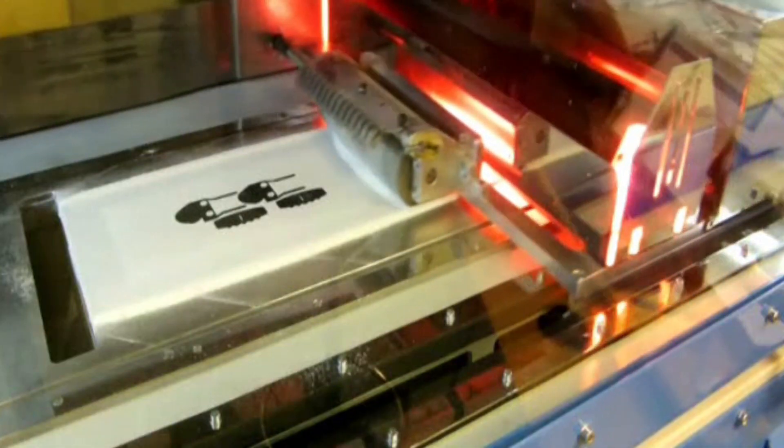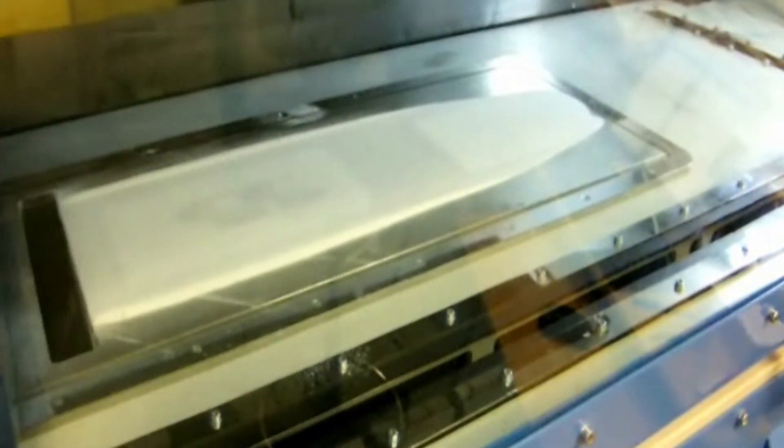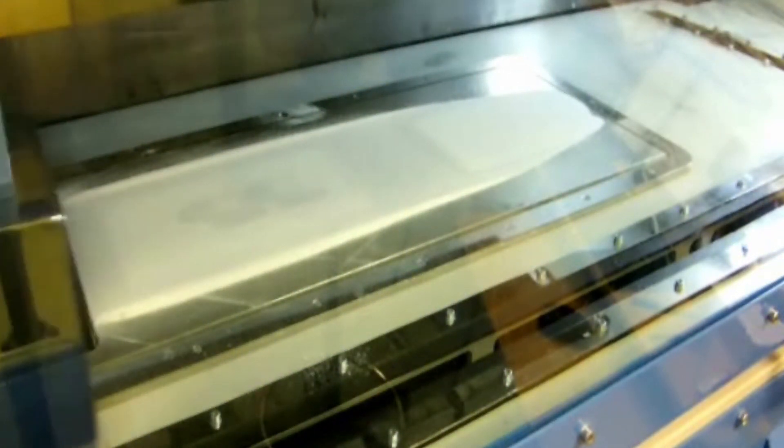What high speed sintering does is replace this laser system with an infrared lamp and an inkjet printhead. We have a bed of powdered material and then what we do is input thermal energy into that bed in the form of an infrared lamp.